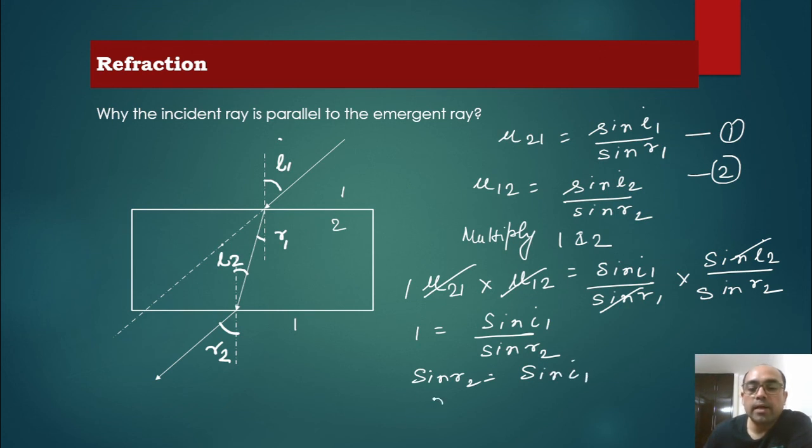Hence we can write that r2 is equal to i1. So this r2 is equal to i1, that means the angle of incidence equal to the angle of emergence. That's why we can say that these two lines are parallel. Incident ray and emergent ray are parallel.